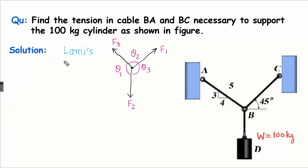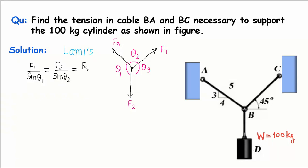So this system of forces is in equilibrium condition. According to Lamy's theorem, we get F1 divided by sine of the angle opposite to it — that is sine theta 1 — will be equal to F2 divided by sine theta 2, and also equal to F3 divided by sine theta 3. So if these three forces are in equilibrium condition, by Lamy's theorem, this will be the condition they have to follow.